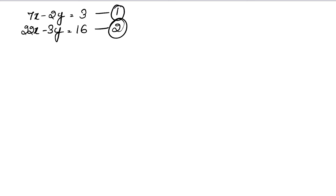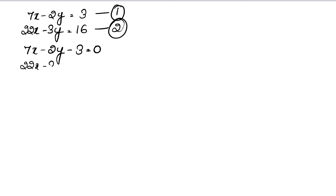What do we do first? We will take the left hand side to C1 and C2. This is our equation: 7x minus 2y minus 3 equals 0. In this way, 22x minus 3y minus 16 equals 0.